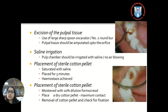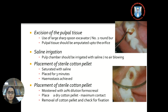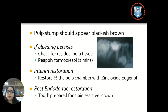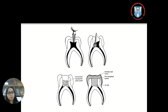Hemostasis is achieved using a sterile cotton pellet saturated with saline, placed with minimal pressure for 3 minutes. After hemostasis is achieved, another pellet moistened with formocresol — with excess removed using a dry cotton pellet — is applied onto the root orifice for maximum contact and left for 4 minutes to achieve fixation. Once fixation is done, it appears as a blackish-brown discoloration on the pulp stumps. Interim restoration is done with zinc oxide eugenol, followed by post-endodontic restoration with a permanent restoration and stainless steel crown.